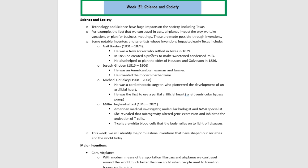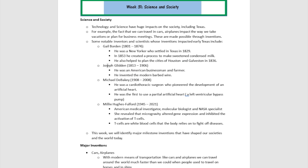His contributions are definitely noteworthy. There was another person called Joseph Glidden. He lived from 1813 to 1906. He was an American businessman and a farmer, and he invented the modern barbed wire. You know where that's used predominantly — it's going to be used in prisons. Barbed wires. The person who invented it was called Joseph Glidden.